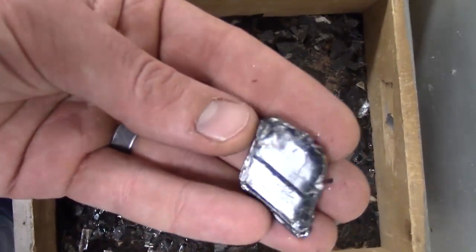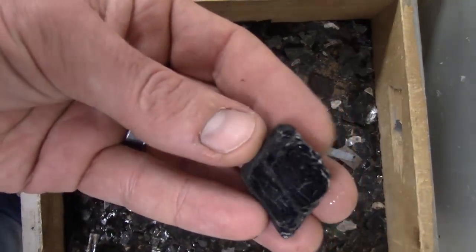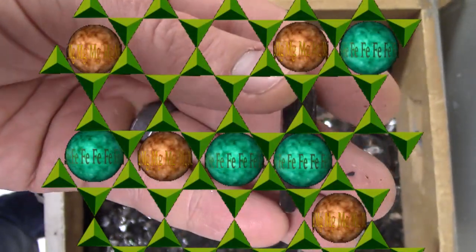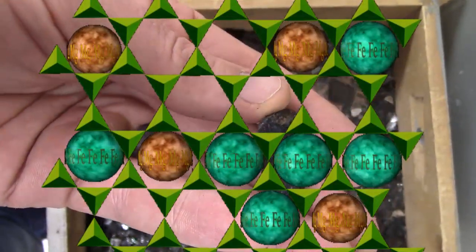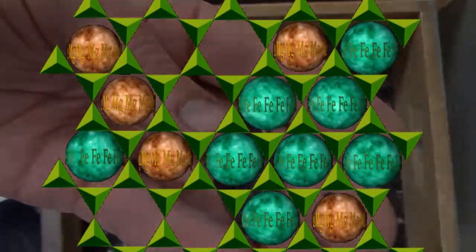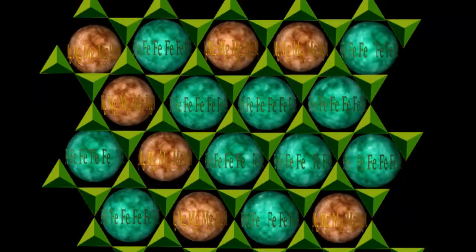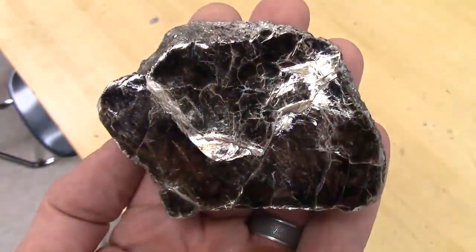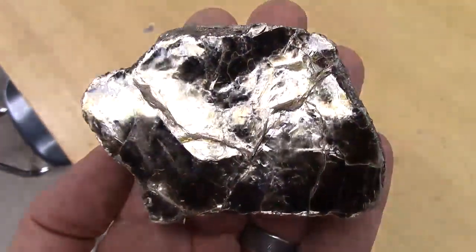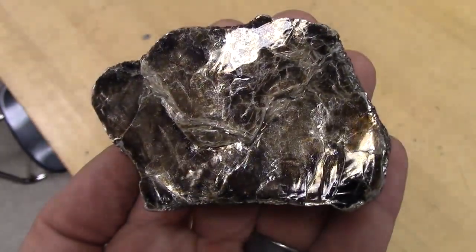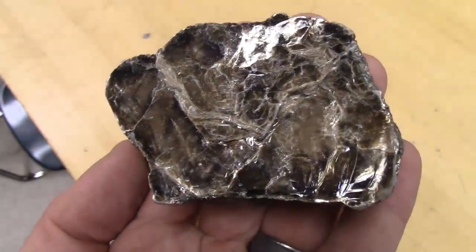Biotite is identified mostly by its dark color and single direction of cleavage, which allows this mineral to grow into what we call books. The more iron in the biotite, the denser, less chemically stable at the surface, and darker it is. The luster becomes less and less the non-metallic vitreous luster as you put more iron in, and approaches what is known as submetallic luster.